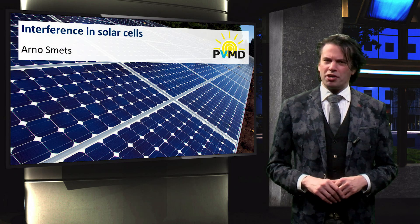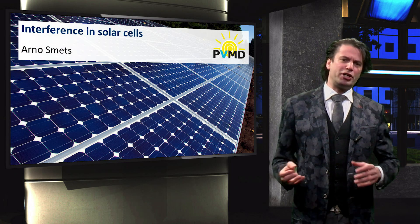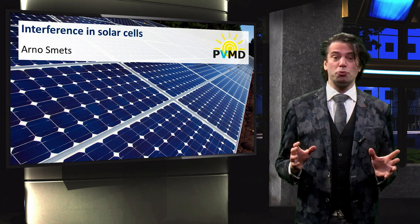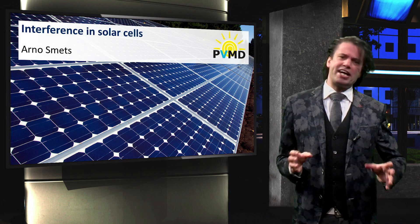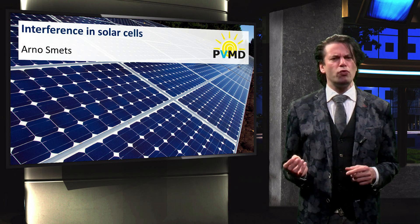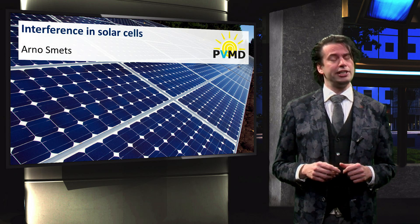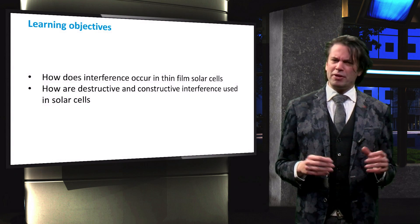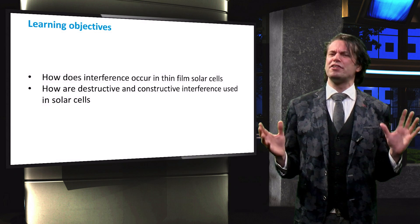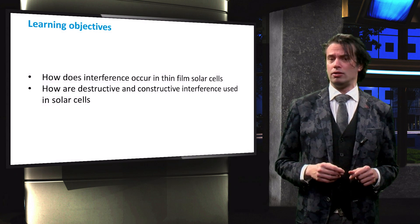In the previous video we saw that electromagnetic waves interfere with each other. Two superimposed waves in phase will create an amplified wave, while two waves in antiphase will cancel each other out. But just how does wave interference occur in a solar cell?